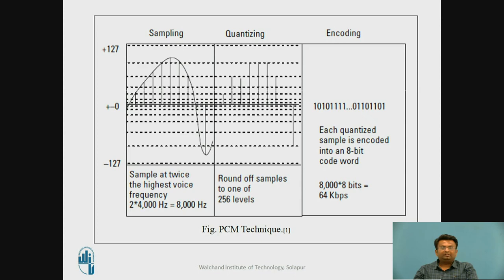Sampling is the conversion of the analog signal into discrete samples. Quantization is the rounding of the samples to the nearest values. Encoding is the process whereby each quantized sample is coded into binary data.